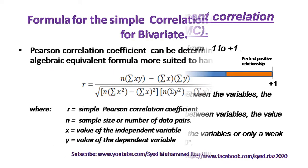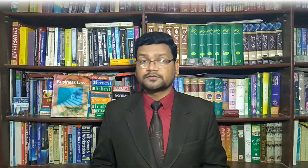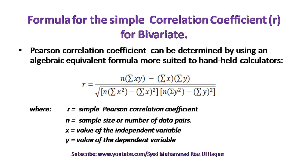Now we discuss the formula for the simple correlation coefficient r, also called the bivariate or Pearson correlation coefficient. The Pearson correlation coefficient can be determined using an algebraic equivalent formula suited to hand calculations. You can also calculate it using software such as SPSS or EViews, or other programming languages. However, fundamentally you should know how to calculate it by hand using a calculator and the formula.